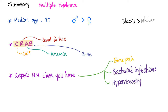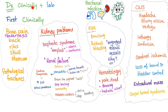Clinically, you have a patient with bone pain — you touch the bone and it is tender, and sometimes there is a bone mass. The bone pain is located in the back, ribs, skull, and sternum, with the back being the most common location. There are also pathological fractures because multiple myeloma weakens bones, and it is more common in males.